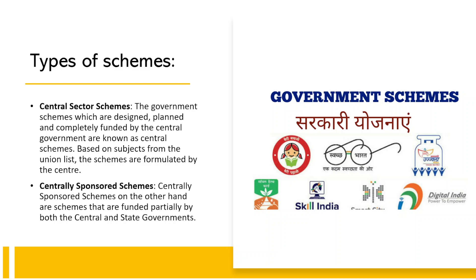Now let's understand what types of schemes can be asked in the examination. Since UPSC is an all-India service examination, you don't need any state-specific schemes — no need to remember state-specific schemes. You only need the central schemes. These central schemes can be of two types. The first type is called central sector schemes, which are planned, designed, and funded entirely by the central government. Then there are centrally sponsored schemes, where both the center and states contribute funds in different proportions. Funding is the major differentiating factor between these two.